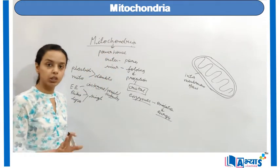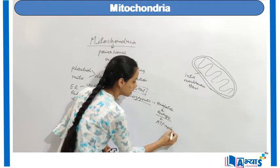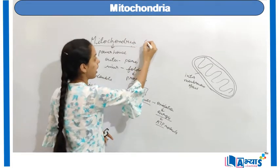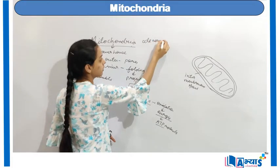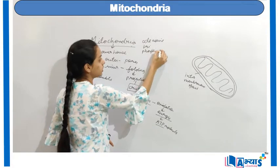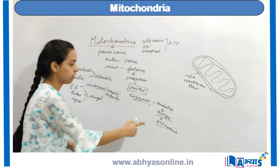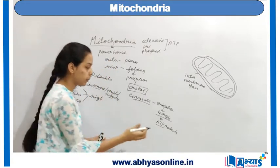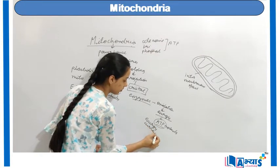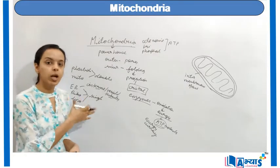The energy produced in mitochondria is in the form of ATP molecules. The full form of ATP is adenosine triphosphate. ATP is known as the energy currency of the cell, and this energy is produced by the organelle known as mitochondria.